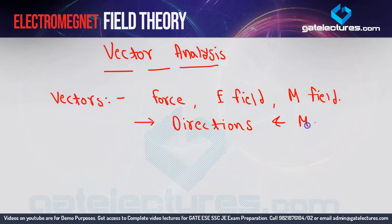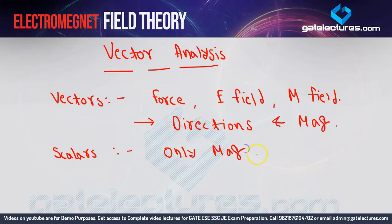So vectors have both magnitude and direction. Scalars, on the other hand, only have magnitude — no direction. Examples of scalars include electric potential and mass.